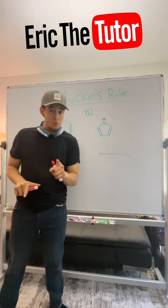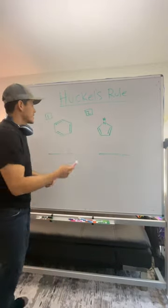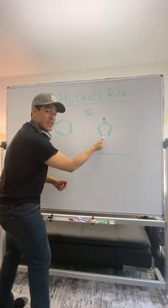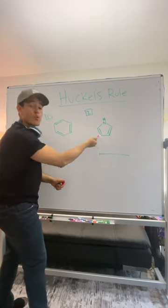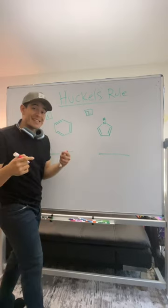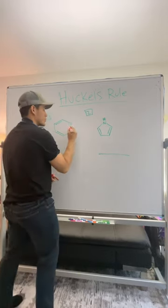Let's do aromatics Huckel's rule in 60 seconds or less. So we have a benzene ring and we have another cycloalkane over here. So what we need to do first off we need to recognize that everything is conjugated. That's the first thing we need to see.